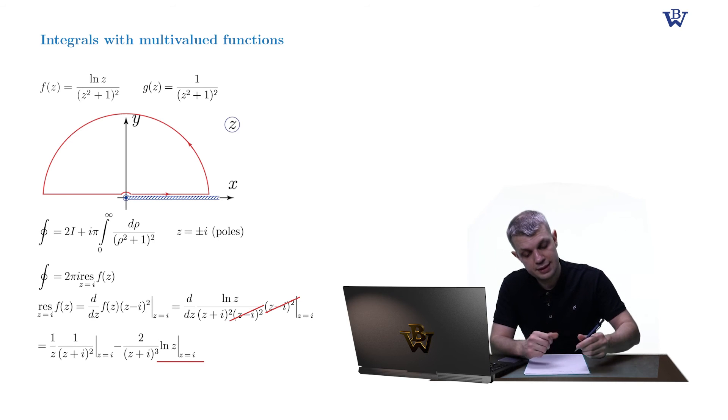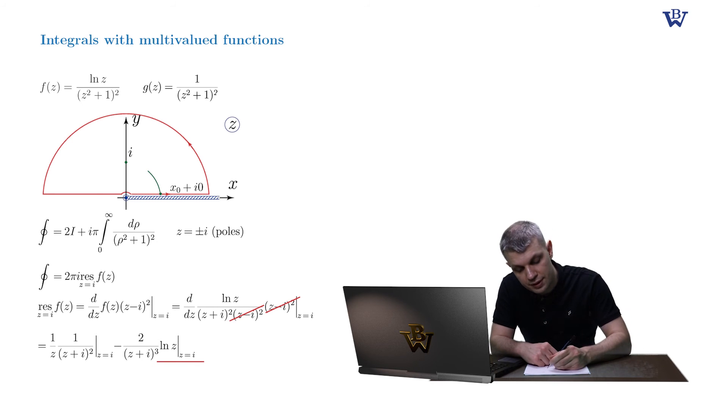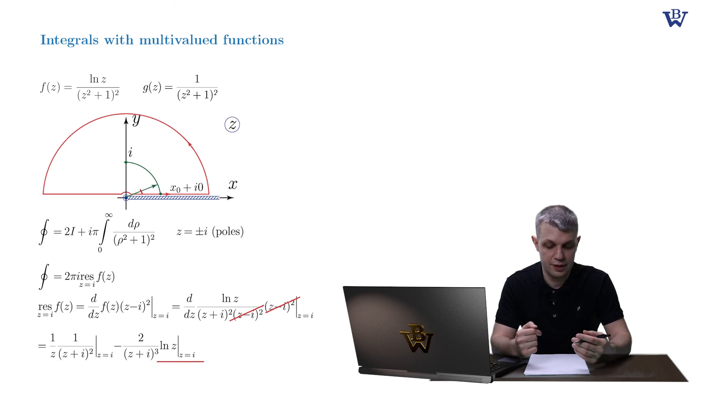So let's compute it. As always, we choose some reference point somewhere on the upper bank of our branch cut, x naught plus i zero. Connect it with the i point by some contour. And extract the change of the argument of the log function.